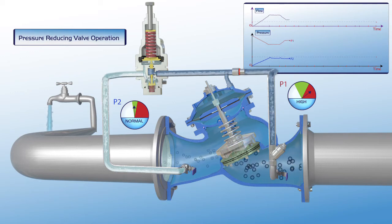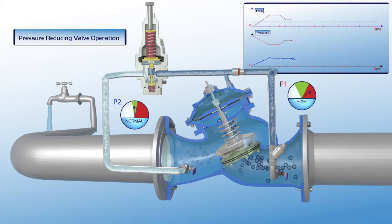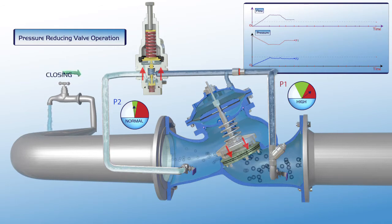As shown on the chart, the downstream P2 pressure line remains stable during a drop in the flow, while the P1 upstream pressure increases.